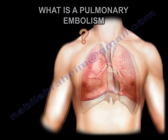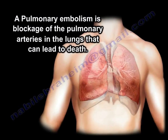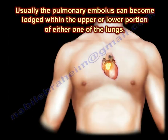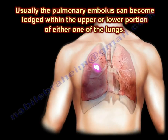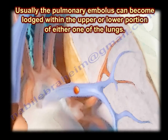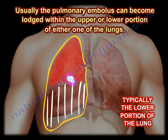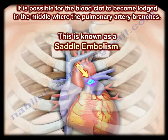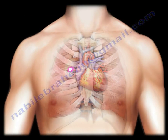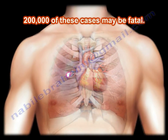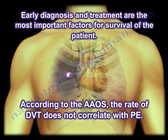A pulmonary embolism is a blockage of the pulmonary artery in the lung that can lead to death. The pulmonary embolus can become lodged within the upper or lower portion of either lung. PE occurs in about 700,000 patients per year and can be fatal in about 200,000 patients. Early diagnosis and early treatment are the most important factors for patient survival.